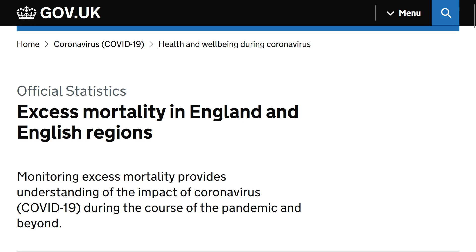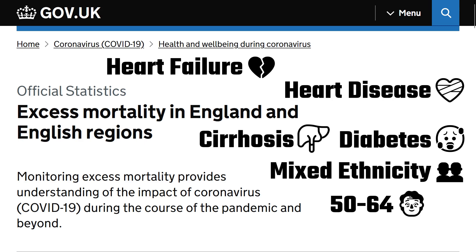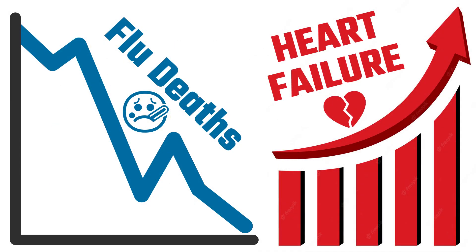So what can we conclude from all of this data? Well, people are dying more often from heart failure, heart disease, cirrhosis of the liver, and diabetes. Those dying are of mixed ethnicity, 50-64 years old, with significantly increased deaths at home. And nobody seems to know why. Thank you.